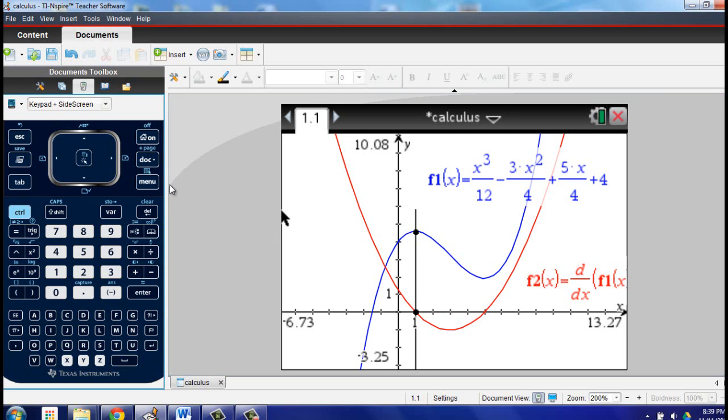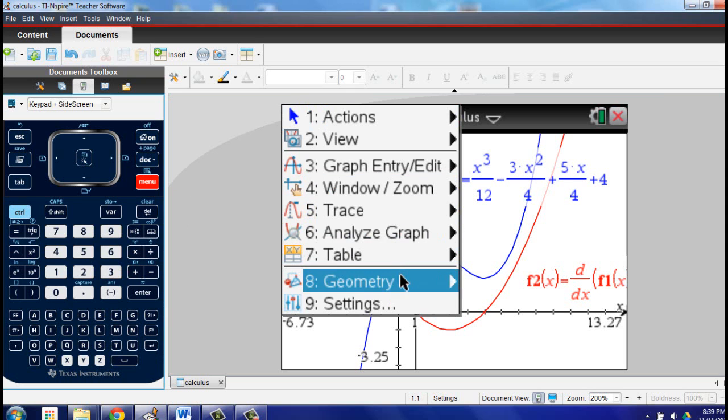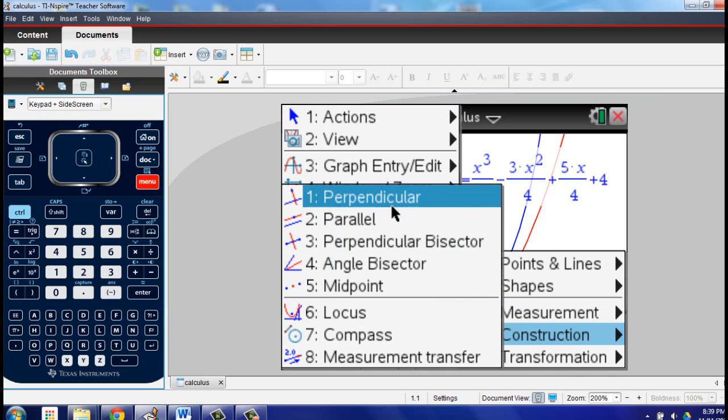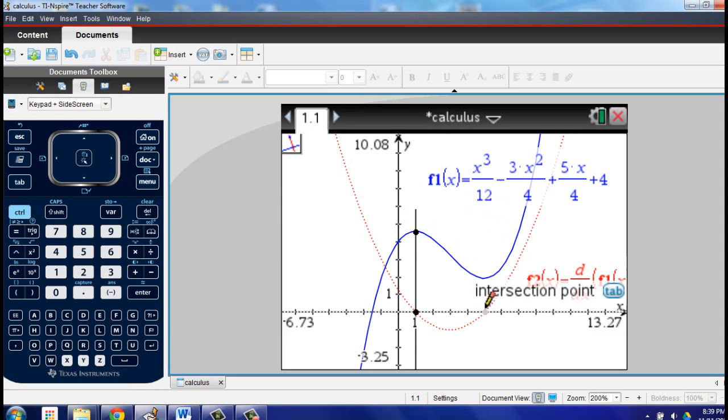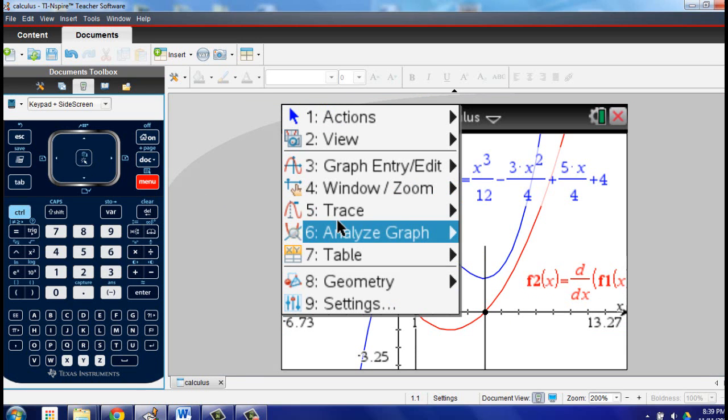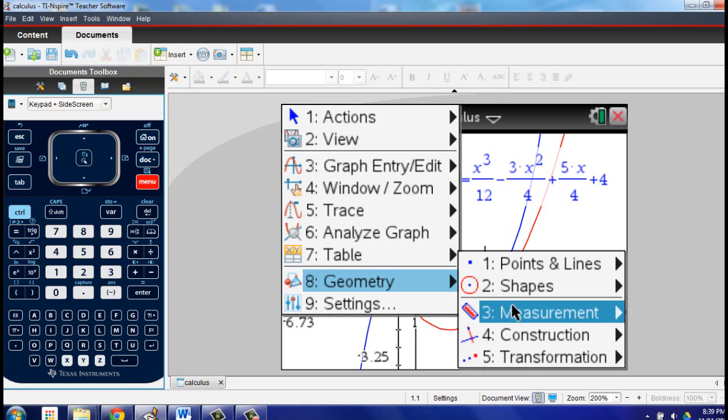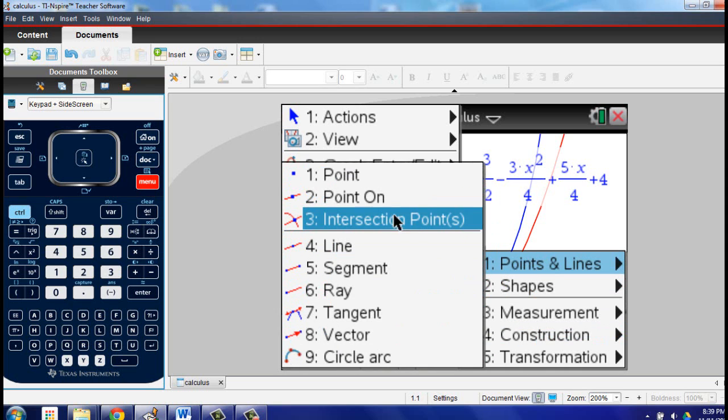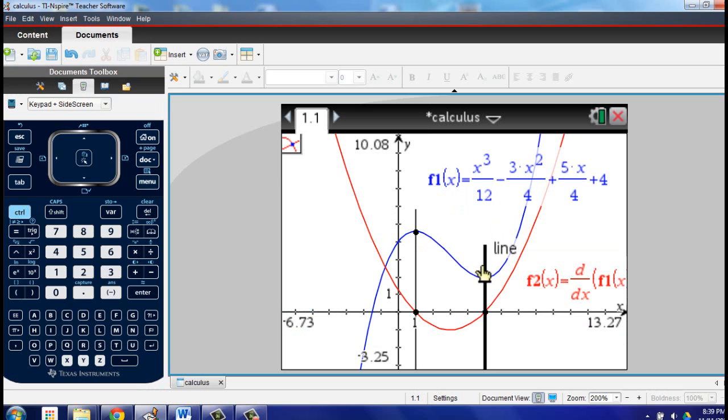And we can repeat that for the other zero or X intercept. And this time, we're fortunate that it does extend through there. I'm going to go ahead and construct another intersection point to make the connection even clearer.